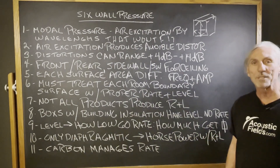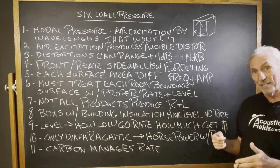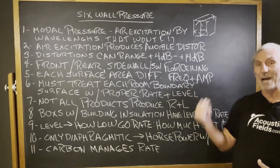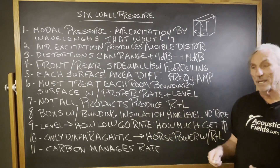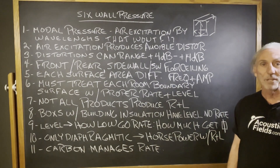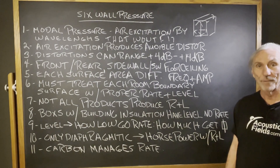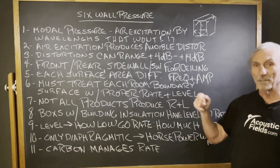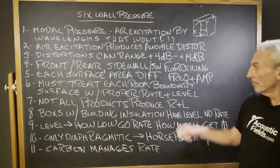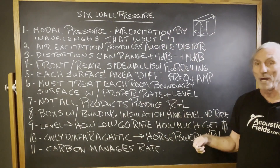When you add our carbon technology on the inside of the cabinet, remember that depth and density of the cabinet determine the level, while the rate — how much absorption you get — is determined by the cabinet fill material. Building insulation just doesn't have the horsepower compared to carbon. So look at level — how low does it go — and rate, realizing that there are six walls involved in this process.